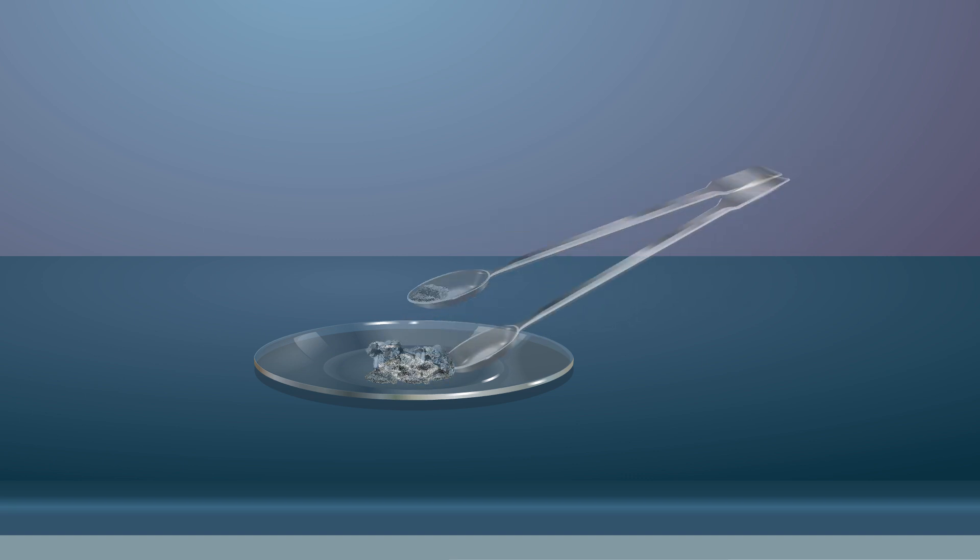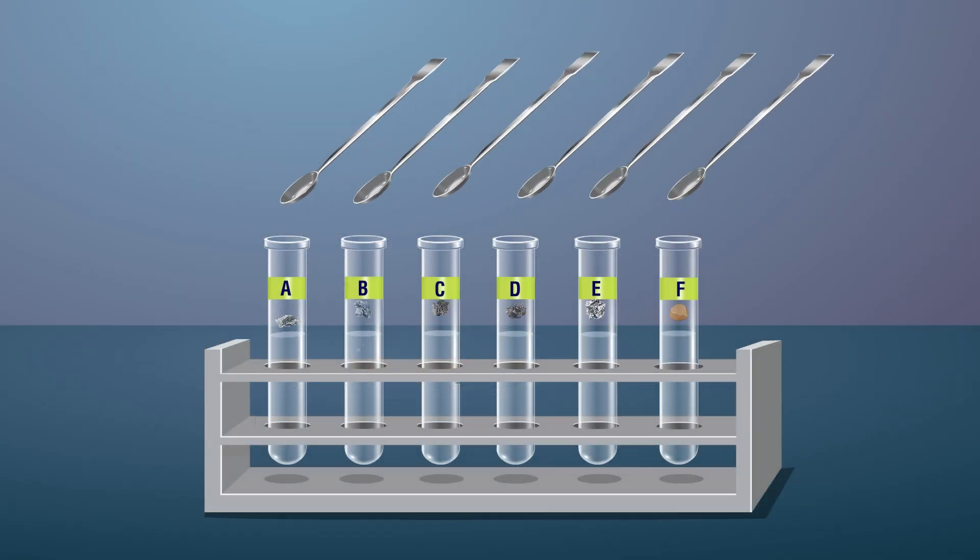Add a small amount of clean metallic samples of magnesium, zinc, lead, iron, aluminium, and copper in each test tube and observe the reaction.